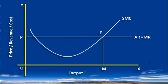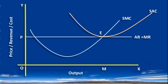M is the equilibrium output. SAC is the short run average cost curve. The minimum point of the SAC curve coincides with the average revenue curve. At this output, average revenue is ME and average cost is also ME.